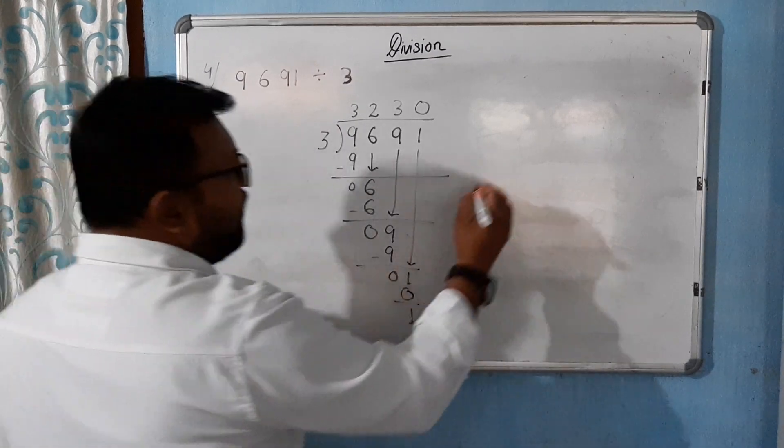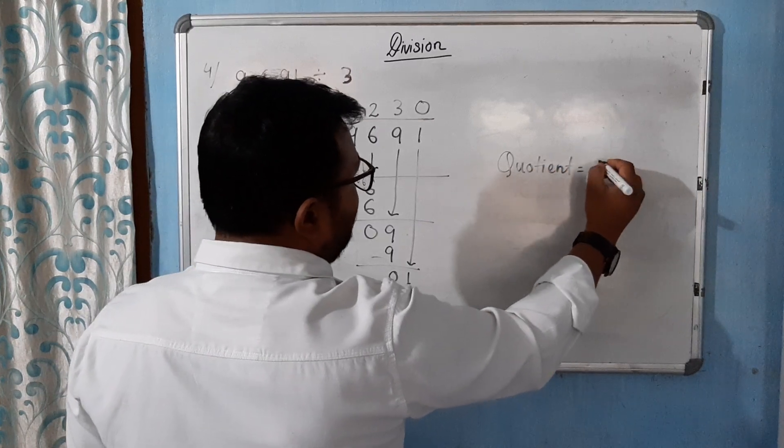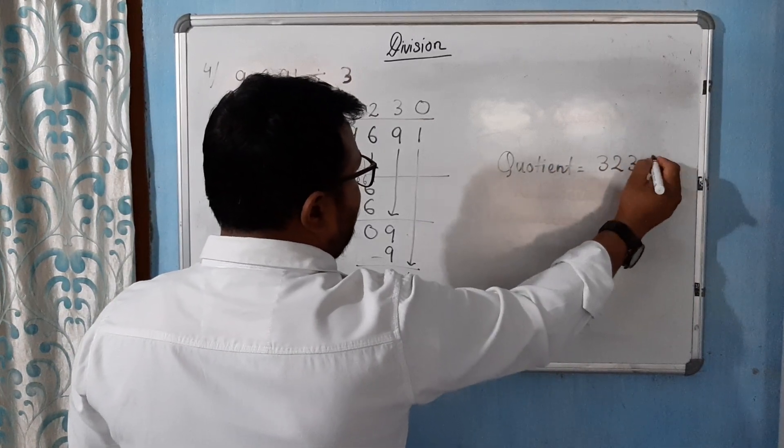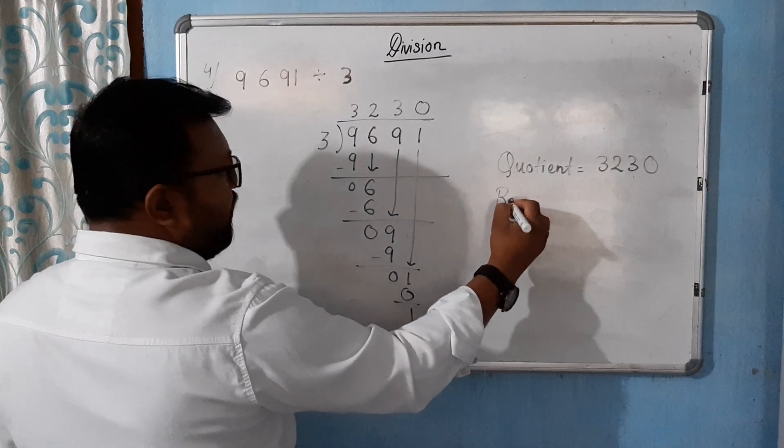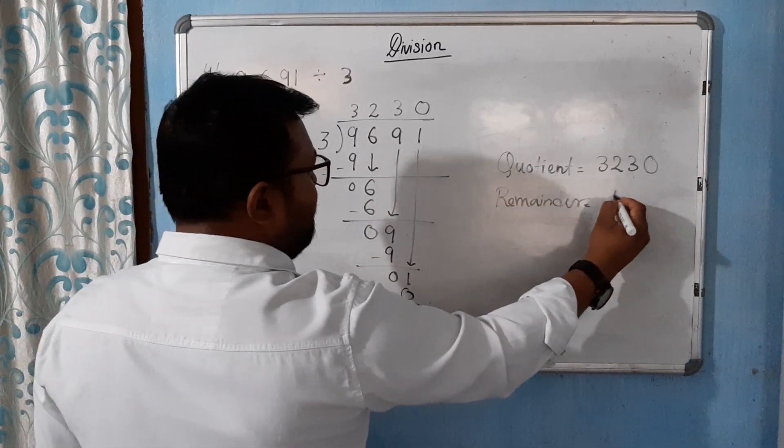So, 3230 and remainder is 1. Is that clear?